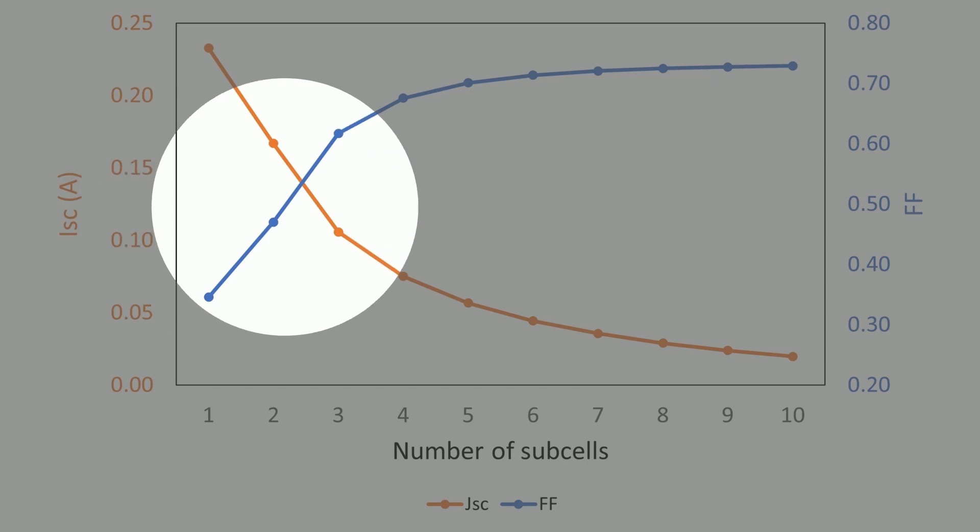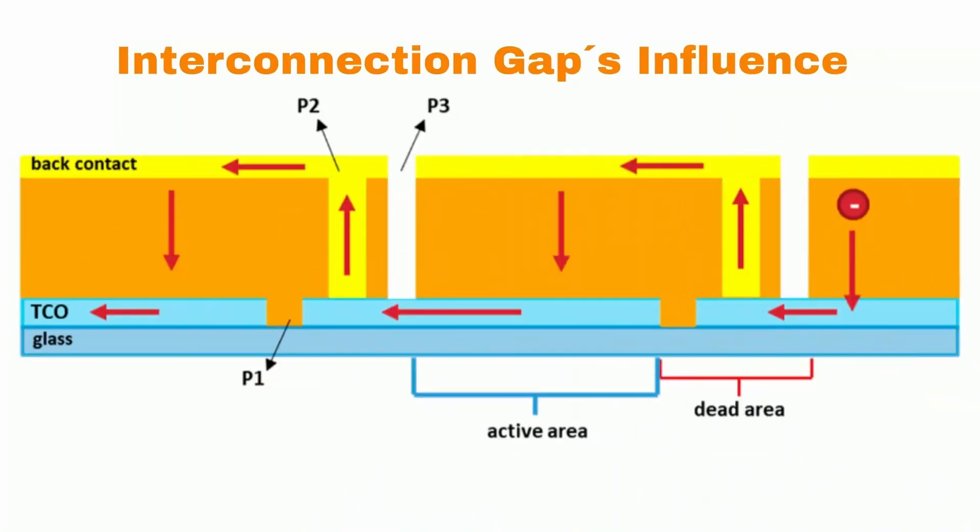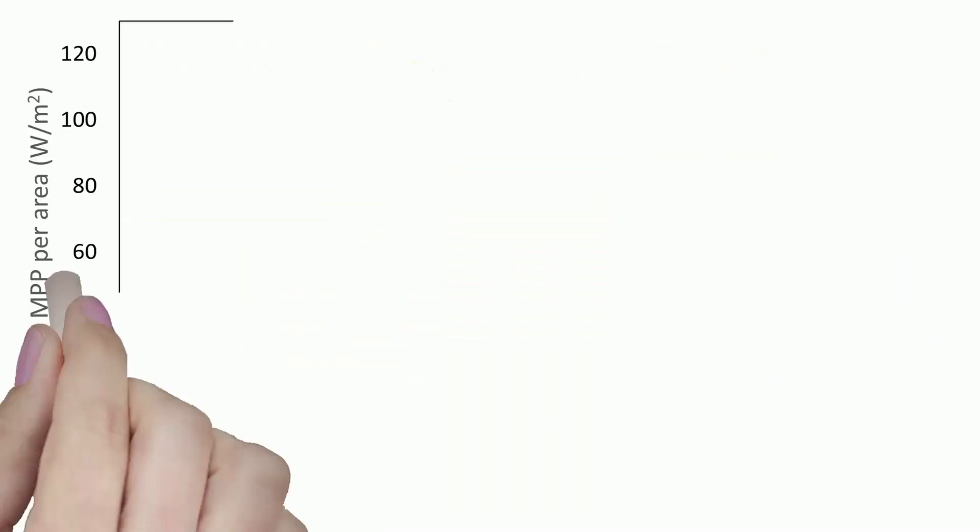With less than 4 sub-cells, the power output decreases due to increasing total resistance. Let's talk about the interconnection gaps influence.